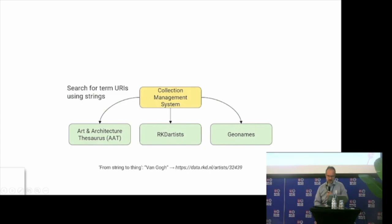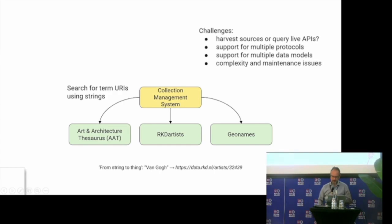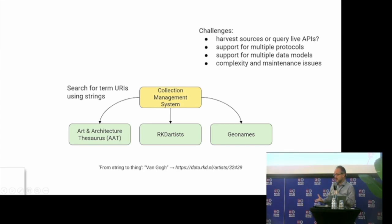Looking at those collection systems, there are a lot of vocabularies, thesauri, and term sources. The way it was, as a collection management system, you had to make links to all these sources — that's a lot of work. Should you harvest each of them or can you use live APIs for that? The vendor has to support multiple protocols and multiple data models. So there's a range of complexity and maintenance issues with this solution.